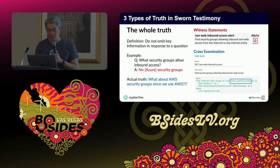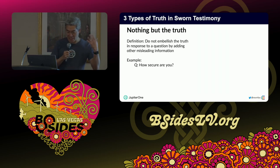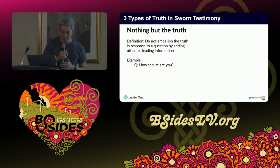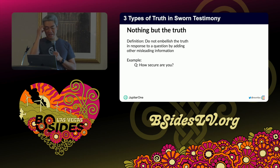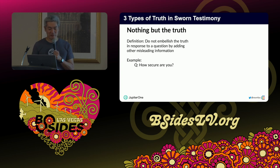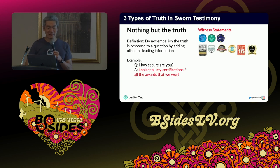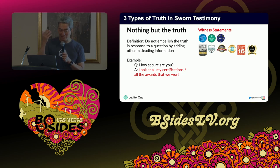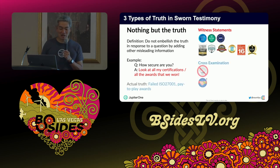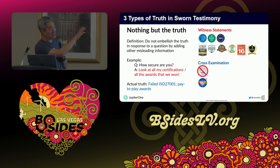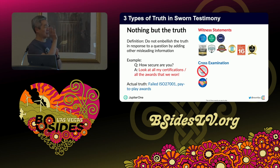The last aspect of the sworn testimony is 'nothing but the truth.' A good example: how secure are you, security vendor? And the answer is: 'look at all the certifications we have and all these awards we won.' Upon cross-examination, we realize they failed their ISO 27001 and basically paid for those awards. Not all those awards are truly pay-to-play, but the point is that 'nothing but the truth' is an example of something like this.